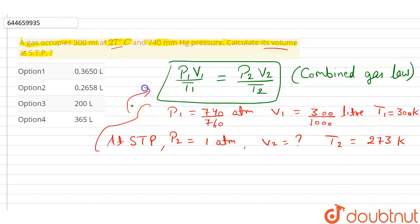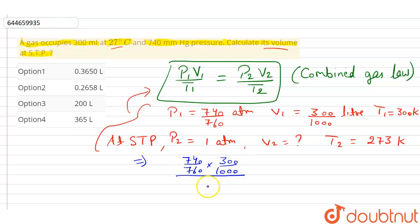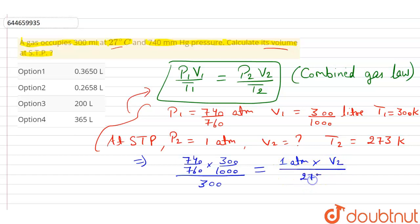Putting these values into the equation: P1 is 740/760, V1 is 300/1000, T1 is 300 Kelvin on the left side. P2 is 1 ATM, V2 is to be found, and T2 is 273 Kelvin on the right side.